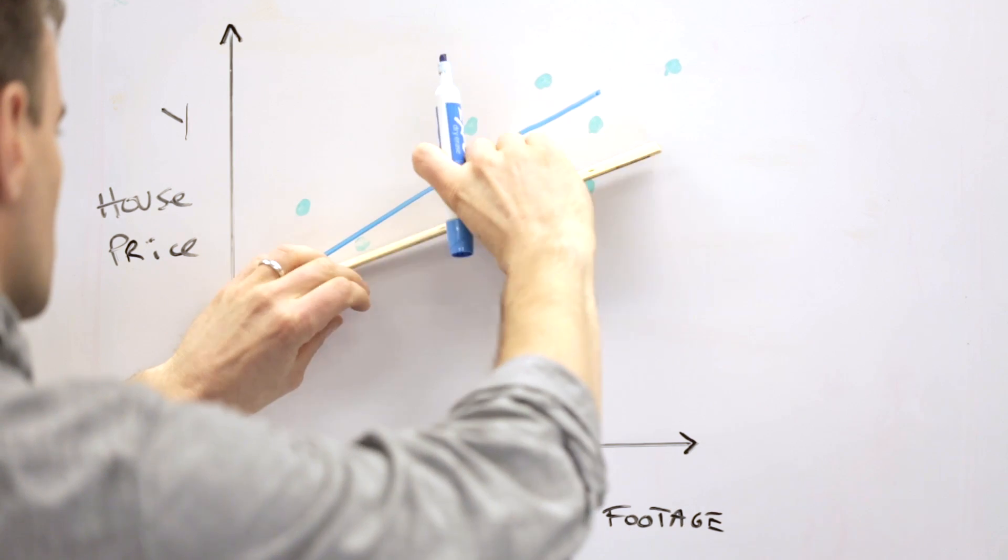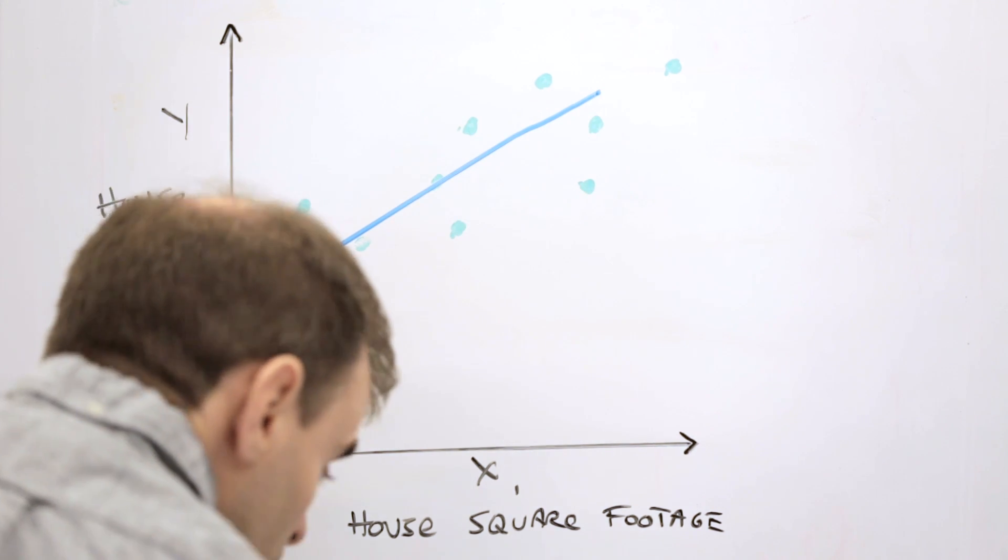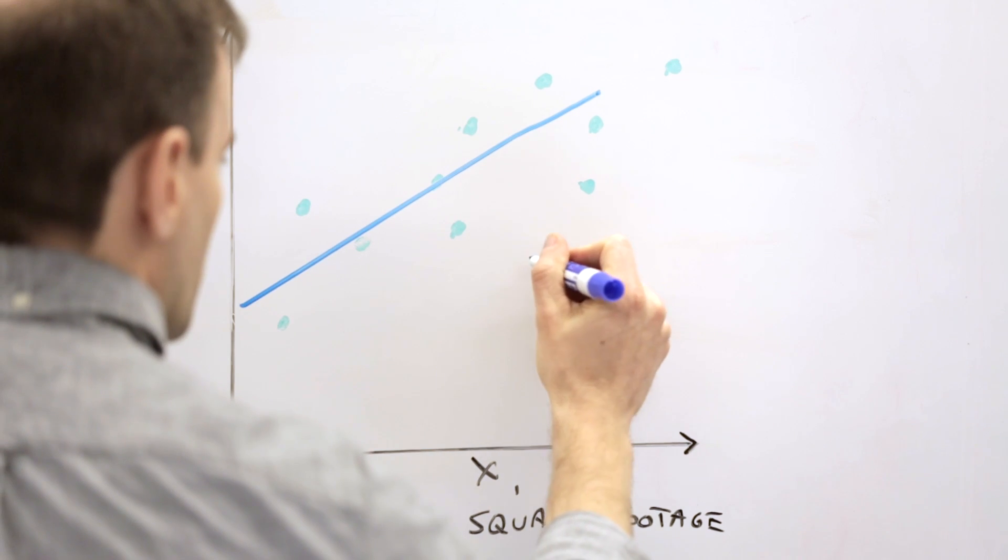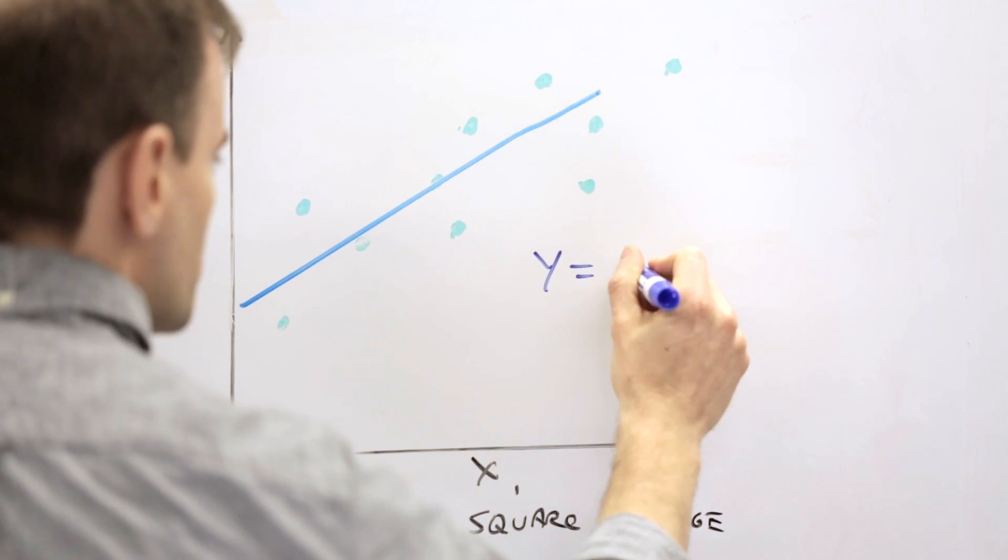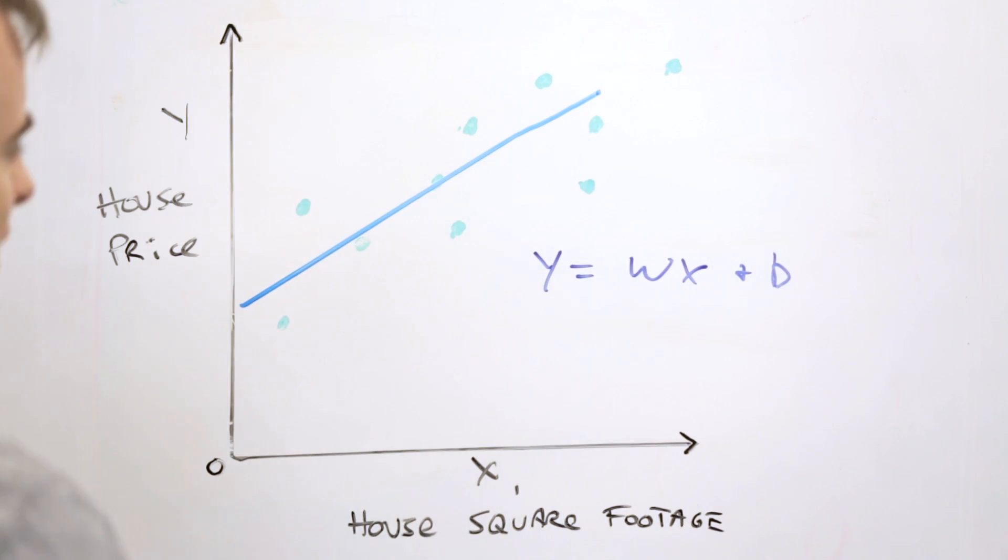And this line is now a model that predicts housing price given an input. We can recall from algebra one that we can define this thing as y equals wx plus b. Now in high school algebra, we would have said mx. Here we say w because it's machine learning and this is referring to our weight vectors.